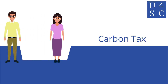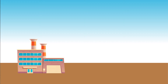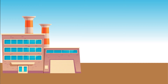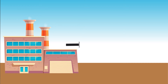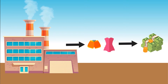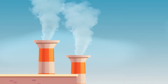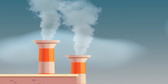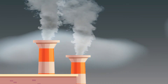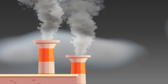Academy for Social Change presents Carbon Tax. Emma owns a business that makes and sells bathing suits. As the company owner, her primary concern is maximizing profits by selling many bathing suits. She may not think much about the carbon dioxide emissions caused by manufacturing and shipping of her product, especially if processes that use fossil fuels are her cheapest option.